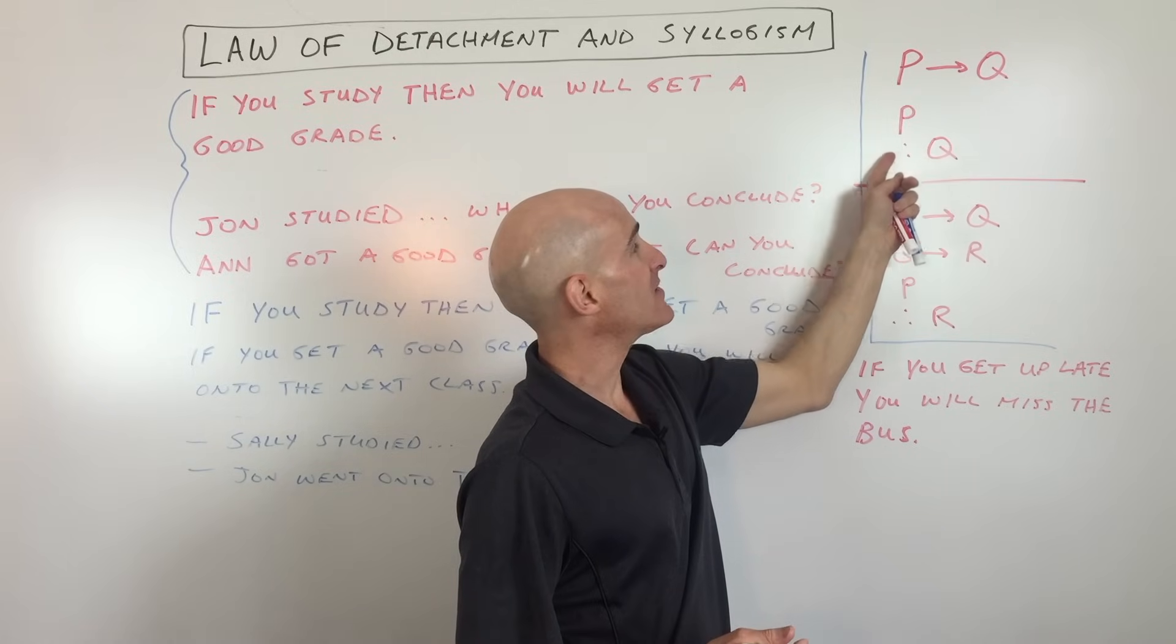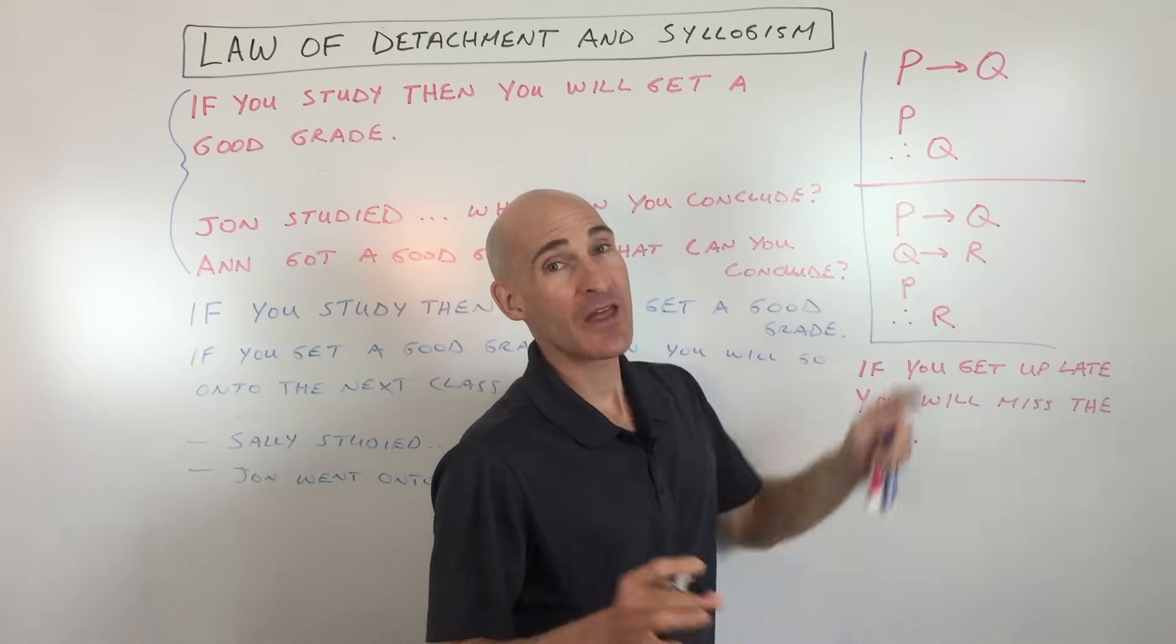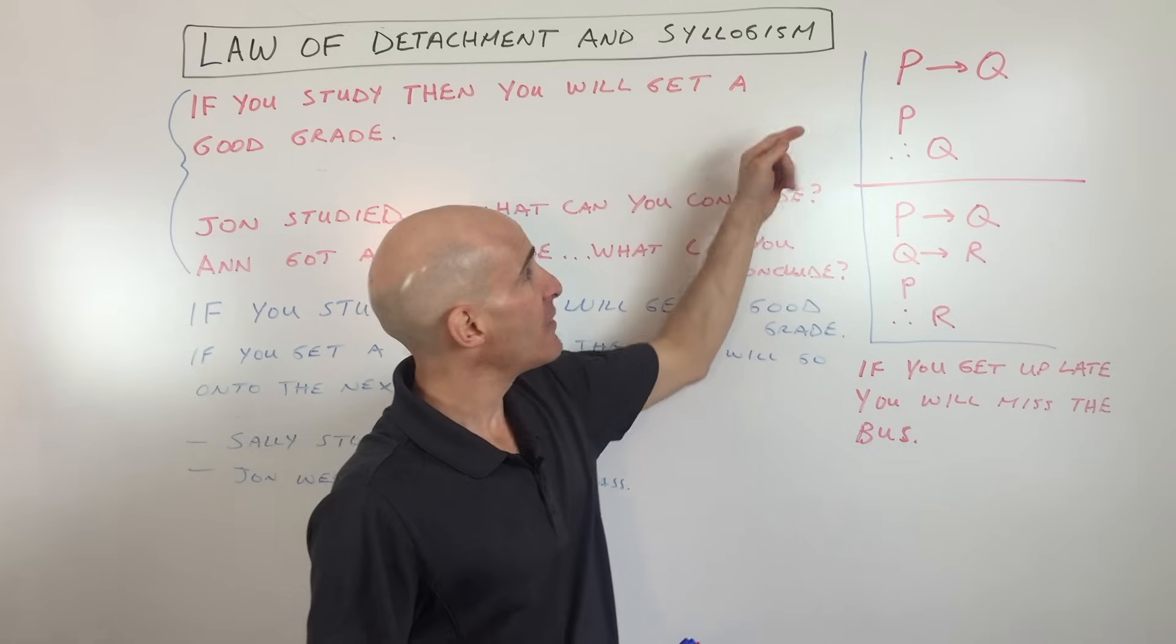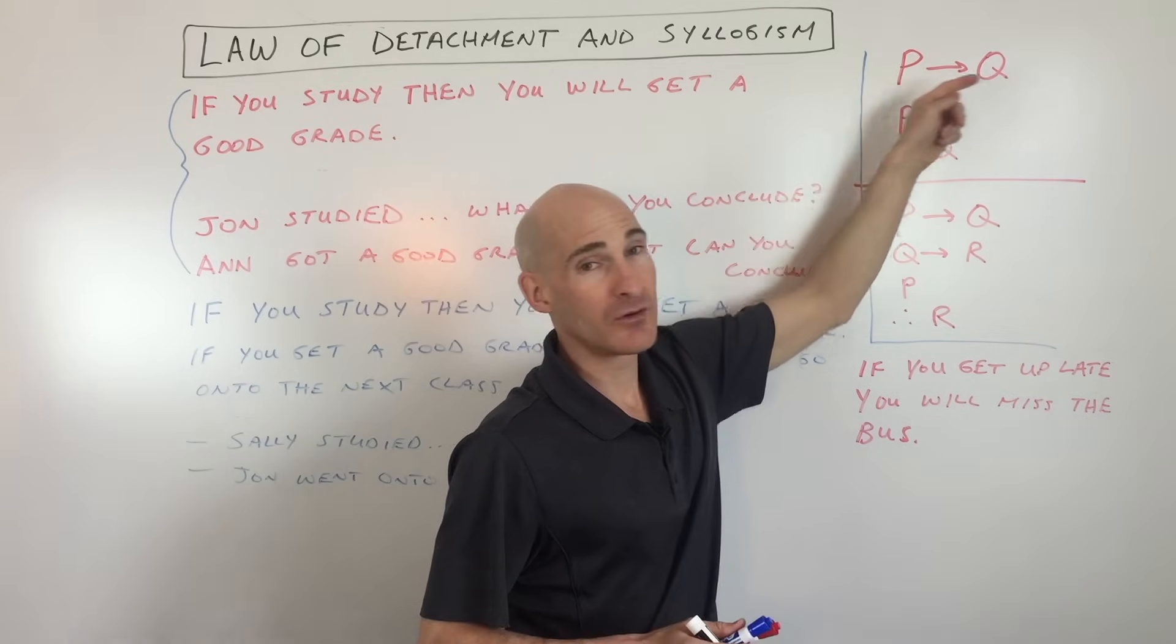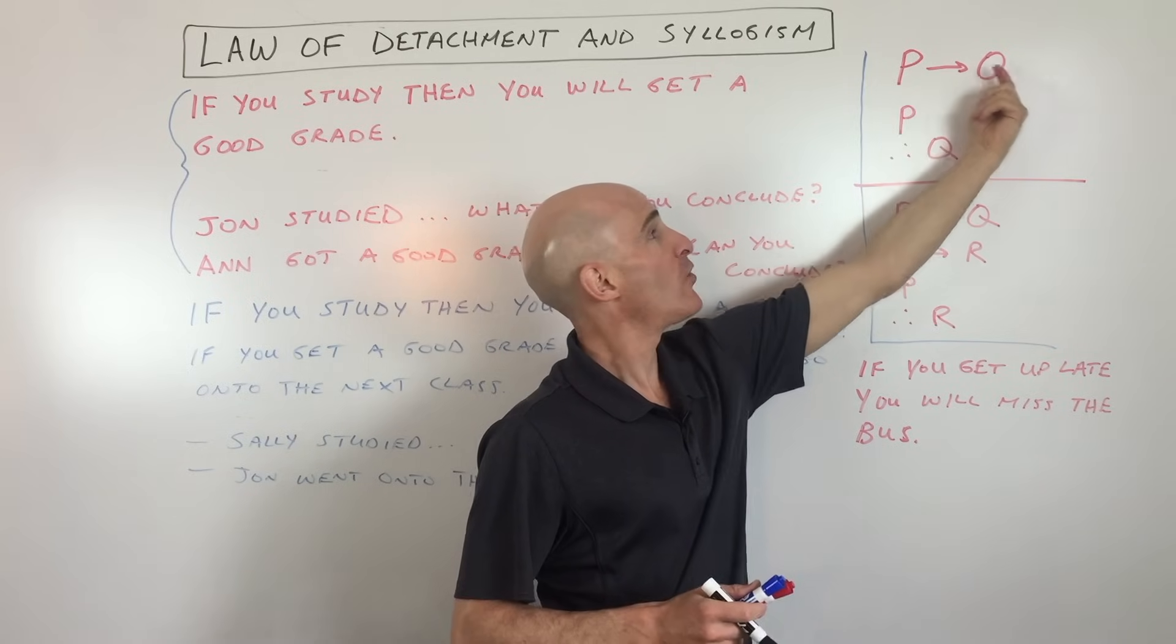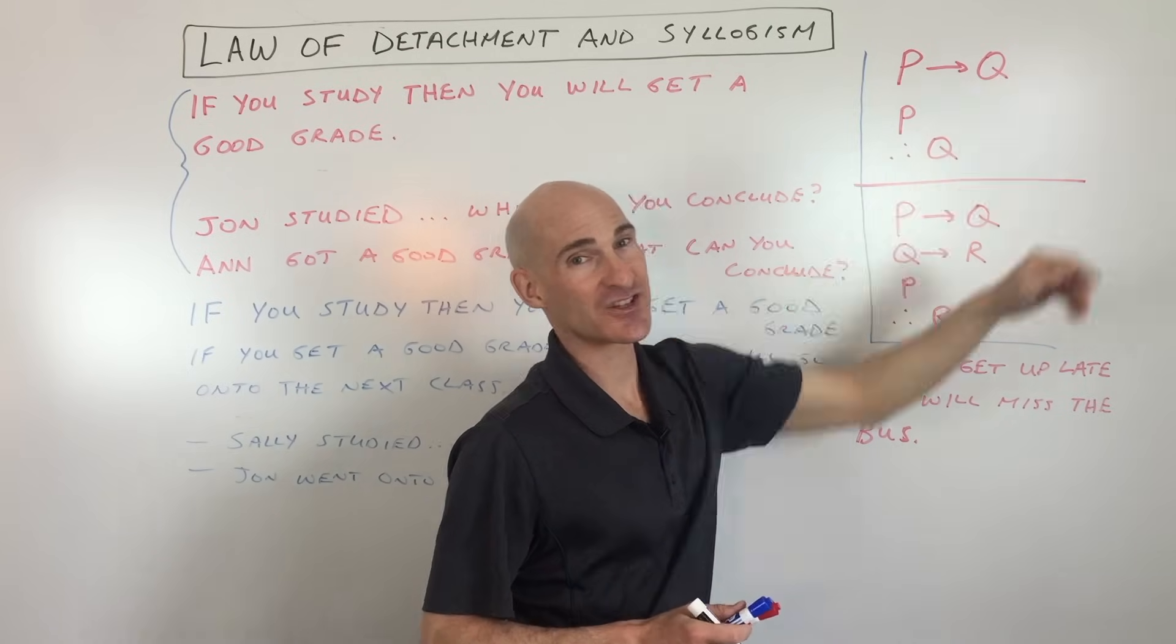So if P happens, these three dots mean therefore, therefore Q will happen. Now the important thing to remember when you're working with these laws is that they flow in the arrow direction. It doesn't go against the arrow, it's like a river, it goes just that one direction.